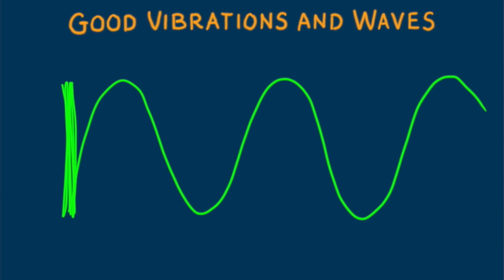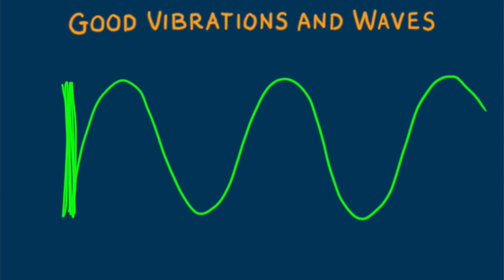A periodic wiggle in both space and time is a wave. A wave extends from one place to another.